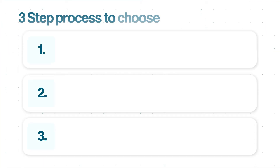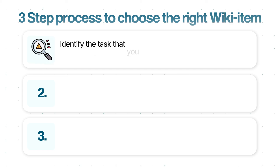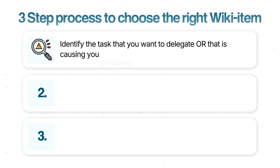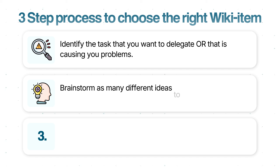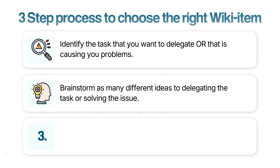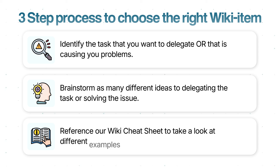So the goal isn't to SOP everything — it's to match the right tool to the right task. In the last part of this video, let's walk through the three-step process that will show you how to choose the right wiki item. Step one is simply to identify the task that you are either wanting to delegate or finding some problems with. Once you have that task in mind, step two is to brainstorm as many different ideas that will help you either delegate the task or act as a solution to the problems you're experiencing. And step three is to reference our wiki cheat sheet to take a look at all of the different examples of wiki items we have and when we would normally use them.